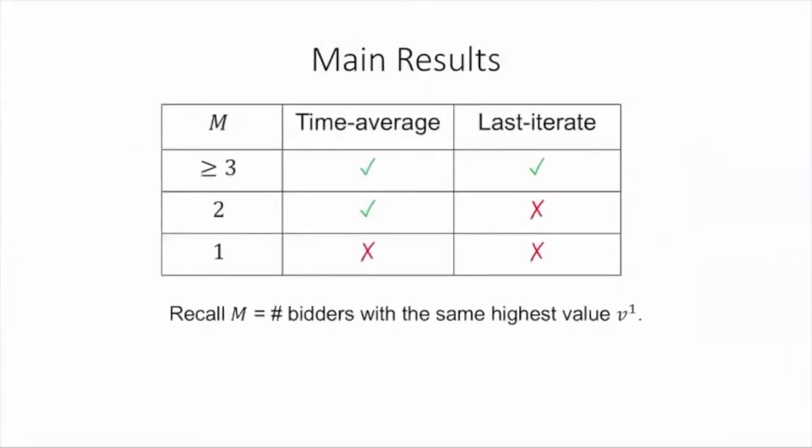Here are our main results. Recall that M equals the number of bidders with the same highest value v1. We prove that any mean-based learning algorithms will lead to Nash convergence if M is more than one. If M is more than two, we prove they will almost surely converge, both in time average and last iterate. But if M is exactly two, we only prove time average convergence but find a counterexample that does not converge in the last iterate sense.